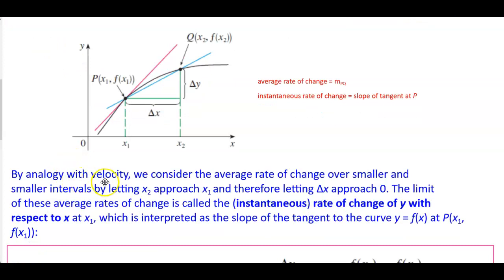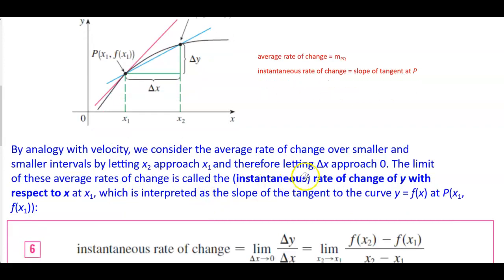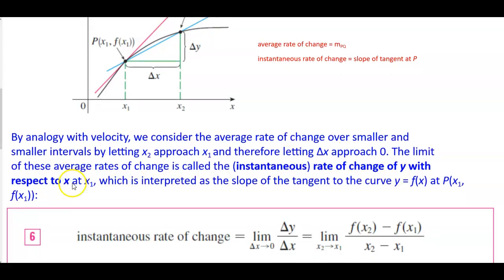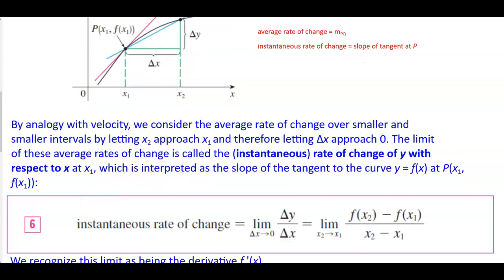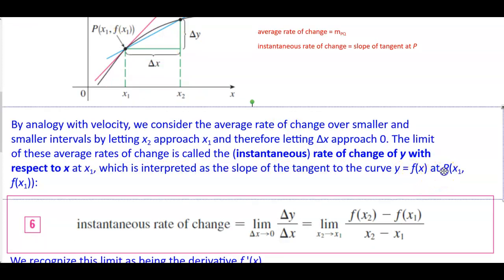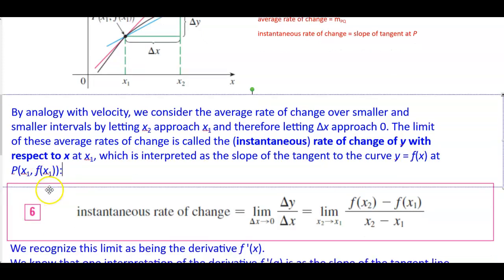The instantaneous rate of change is equal to the slope of the tangent at P. By analogy with velocity, we consider the average rate of change over smaller and smaller intervals by letting x2 approach x1, and therefore letting the change in x approach 0. The limit of these average rates of change is called the instantaneous rate of change of y with respect to x at x1, which is interpreted as the slope of the tangent to the curve y equals f of x at the point P of x1, f of x1.